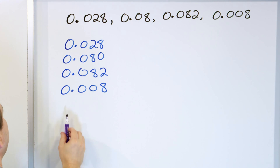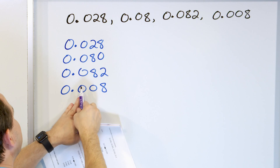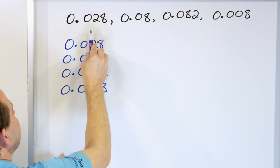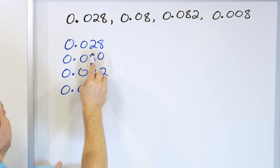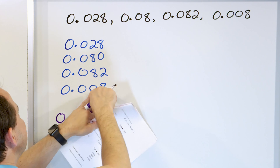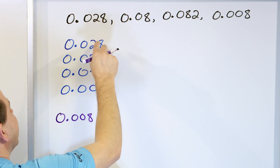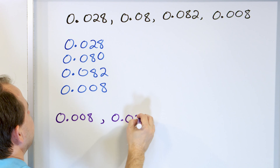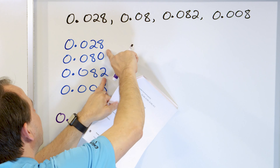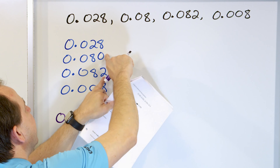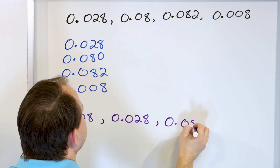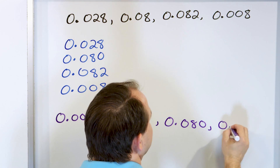Now we compare. The whole numbers are all zeros — tie. We look at the tenths place — also all zeros — another tie. Now we look at the hundredths column for the smallest number. The smallest is a zero, which is a tiebreaker against everything else. So 0.008 is the smallest. Next, other than zero, the next biggest in the hundredths is a 2, so 0.028 comes next. After the 2 come the 8s, but they're tied. So we look at the thousandths: zero is smaller than two, so 0.080 comes next and then 0.082.